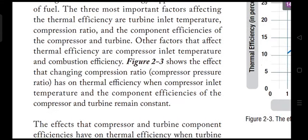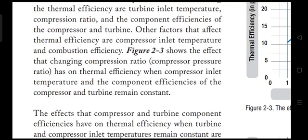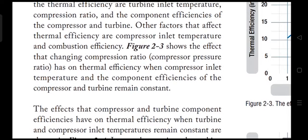Three important factors affect thermal efficiency. The first is turbine inlet temperature — the temperature at which hot gases strike the first stage of the turbine. The second is compression ratio, which is essentially the pressure difference between the inlet and outlet of the compressor — the pressure ratio between the first and last stage of the compressor.